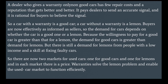So a car with a warranty is a good car, and a car without a warranty is a lemon. Buyers are now effectively as informed as sellers, so the demand for cars depends on whether the car is a good one or a lemon. Because the willingness to pay for a good car is greater than for a lemon, the demand for good cars is greater than the demand for lemons. There is still a demand for lemons from people with low incomes and skill at fixing faulty cars. So there are now two markets for used cars — one for good cars and one for lemons — each with its own price. Warranties solve the lemon problem and enable the used car market to function efficiently.